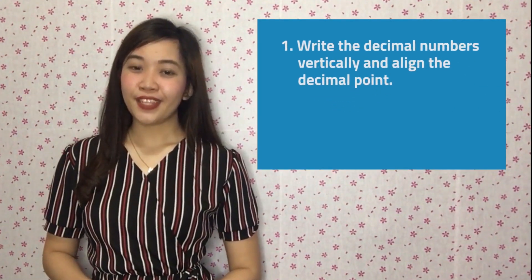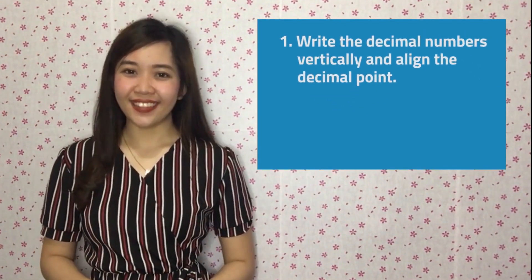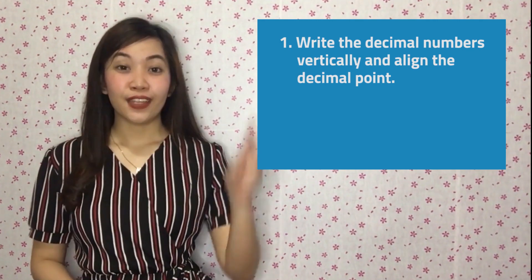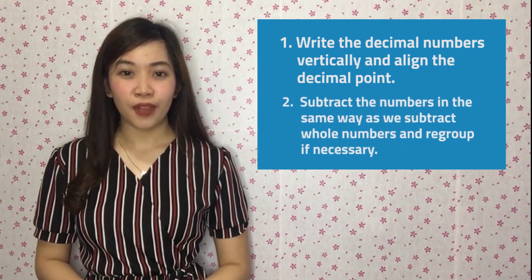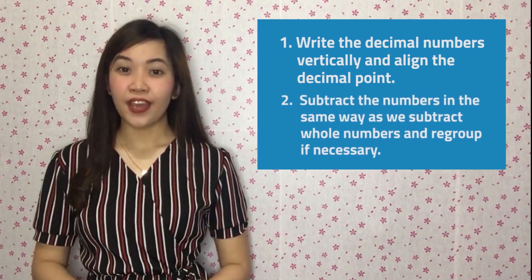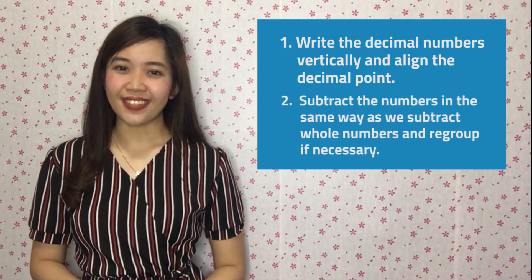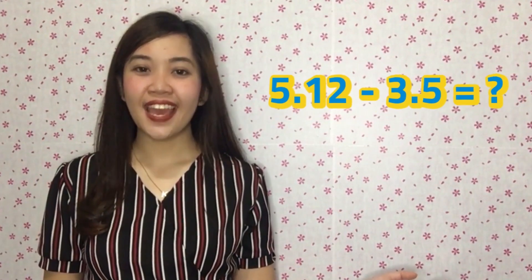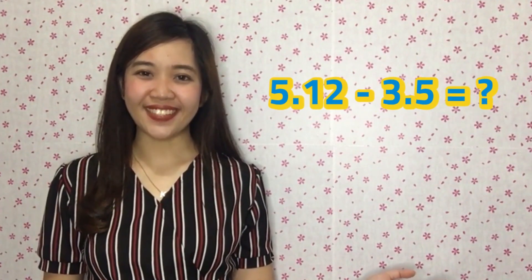Now let's learn how to subtract decimal numbers. Just like in addition, alignment is the key in subtraction. To subtract decimals, follow these steps: one, write the decimal numbers vertically and align the decimal point. Two, subtract in the same way as we subtract whole numbers and regroup if necessary. So let's find the difference between five and twelve hundredths and three and five tenths.